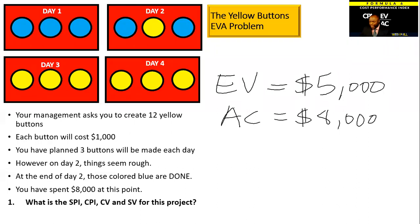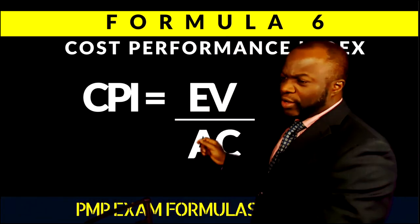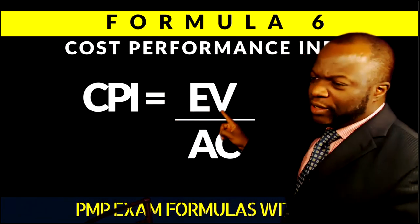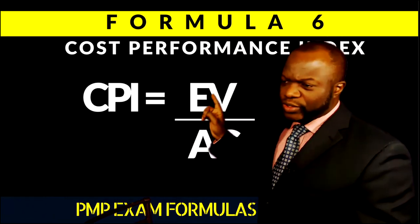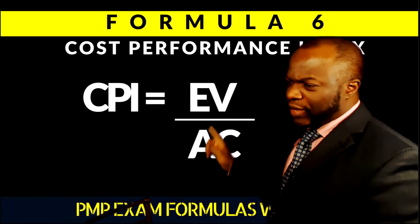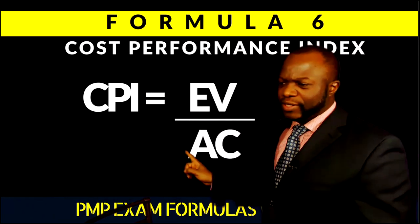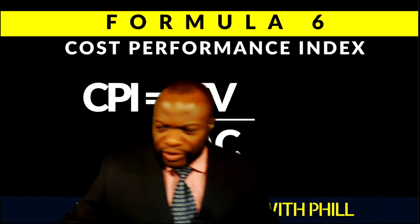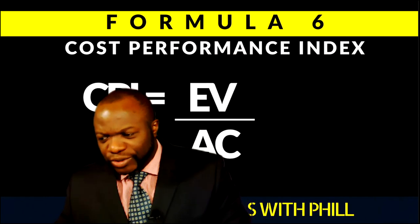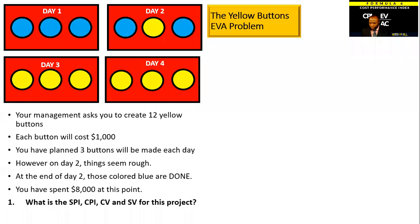As you can see the formula behind me: cost performance index is equal to earned value divided by actual cost. So we're going to do a straight division — earned value divided by actual cost. Earned value is $5,000 and actual cost is $8,000, so we're going to do $5,000 divided by $8,000.